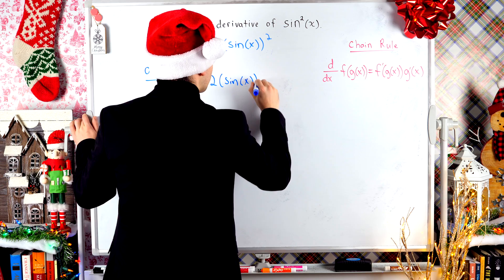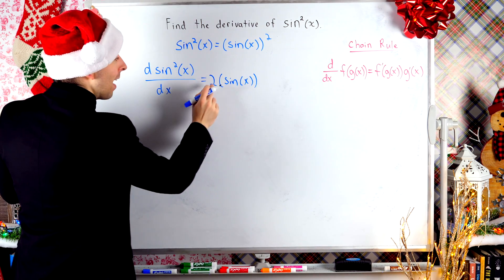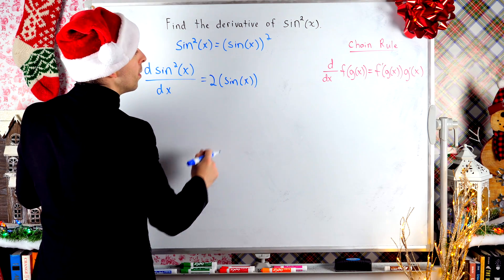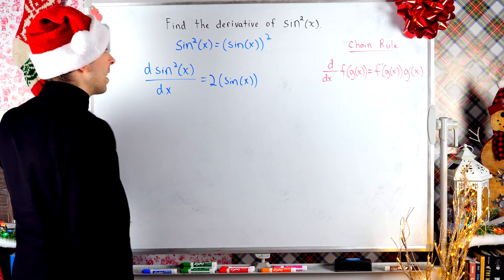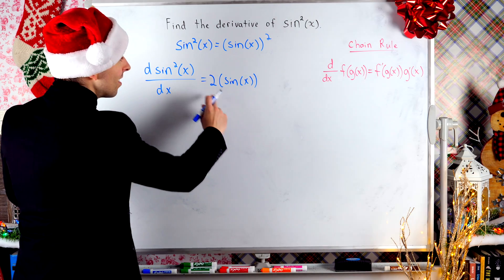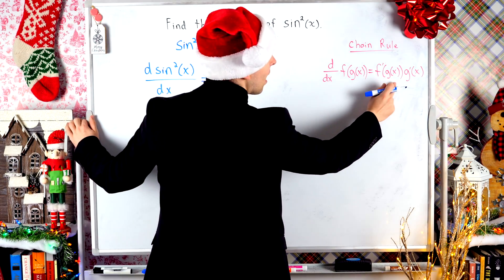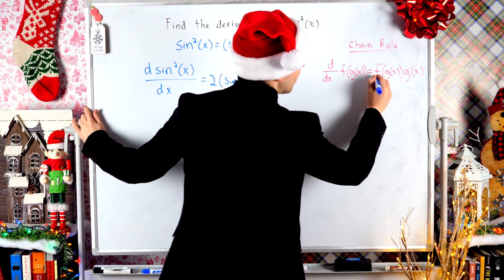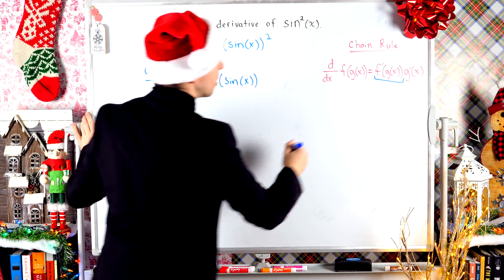We had sine of x squared, we dropped the exponent as a factor, and then we reduced the exponent by 1. So we did have an exponent of 2, now we've got an exponent of 1. That's the derivative of the outside function, leaving the inside function the same. That's this piece of the chain rule right there.